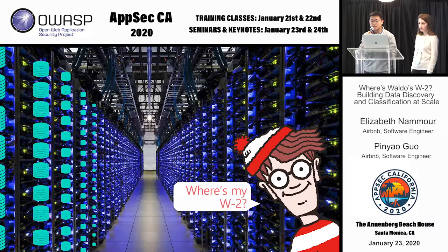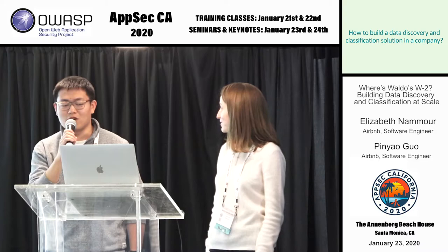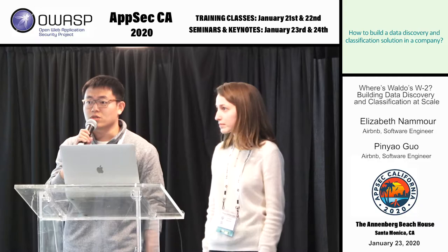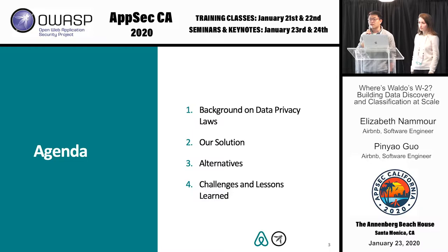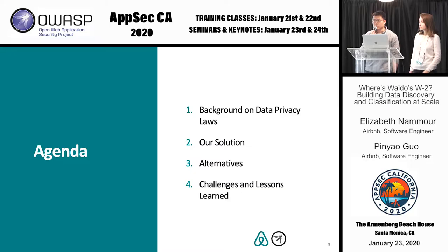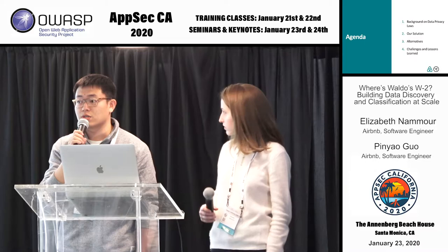In this presentation, we are going to cover how to build a data discovery and classification solution in a company that can be scalable as the company grows and also robust to failures. We will first introduce some background of the problem, then present an in-house solution we came up with at Airbnb. Next, we will analyze some alternatives that already exist in the industry and explain why we built our own in-house platform. Finally, we will share some challenges we've experienced and suggestions for those who want to build their own in-house solution. I will pass it to Lizzie to talk about some backgrounds.